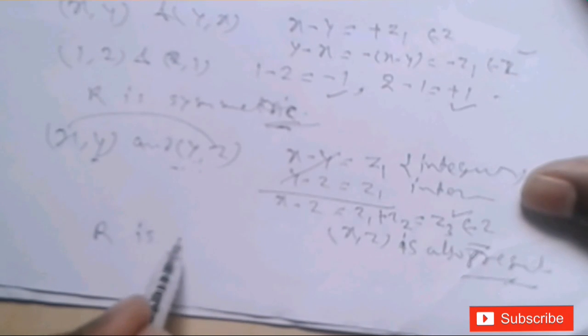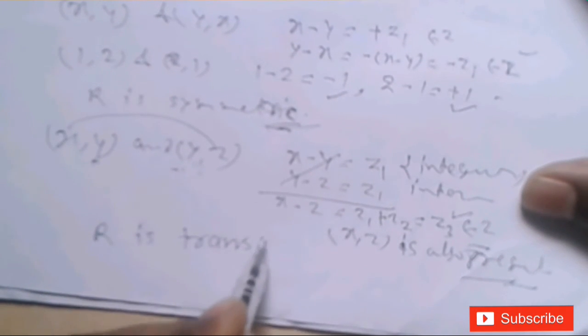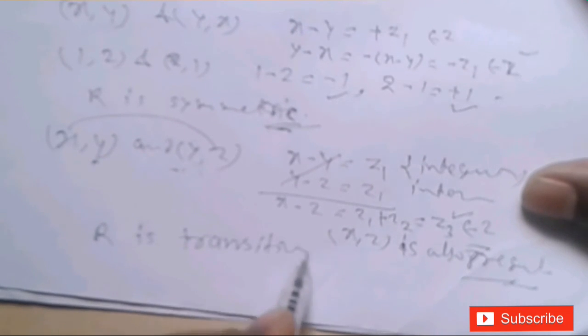इस तरह से यह relation R transitive भी हो गया। यह clear हो जाता है कि integer से जो question है, यह reflexive भी है, symmetric भी है, और transitive भी है।